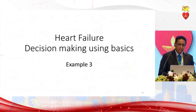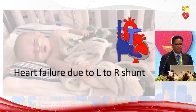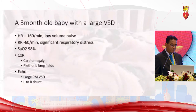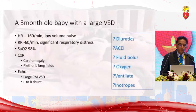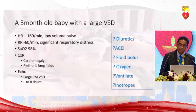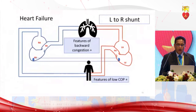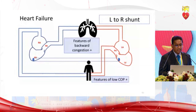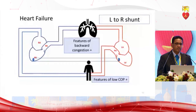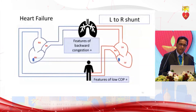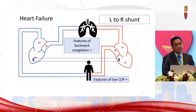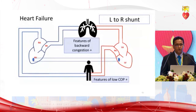Case 3: The commonest scenario — a three-month-old with a large VSD. Heart rate 160, low volume pulse, respiratory rate 60, significant respiratory distress, saturation 97-98%. Chest X-ray: cardiomegaly with plethoric lung fields. Echo: large perimembranous VSD with left ventricular dilation. Blood bypasses systemic resistance through the VSD, going from LV to RV into pulmonary circulation, causing low cardiac output and pulmonary congestion — both from backward congestion and excess forward flow to pulmonary circulation.